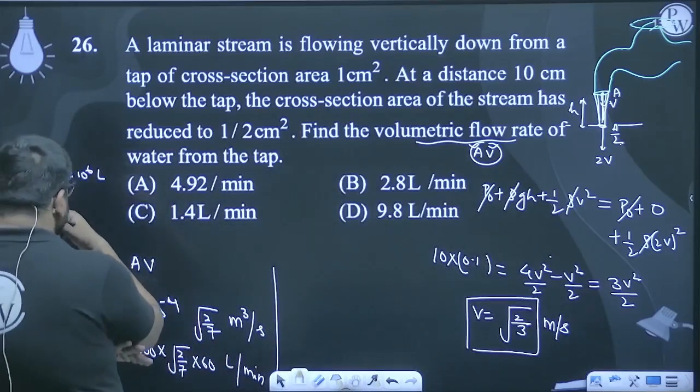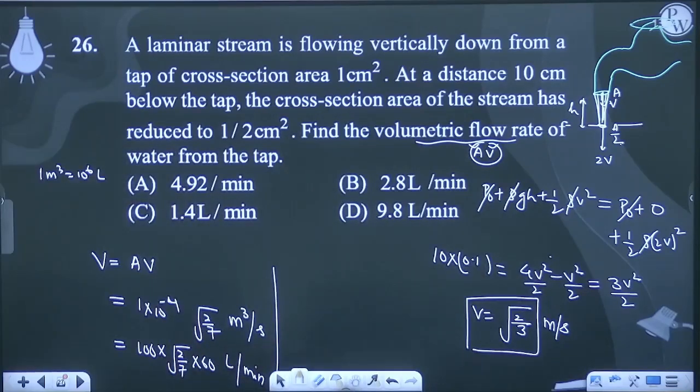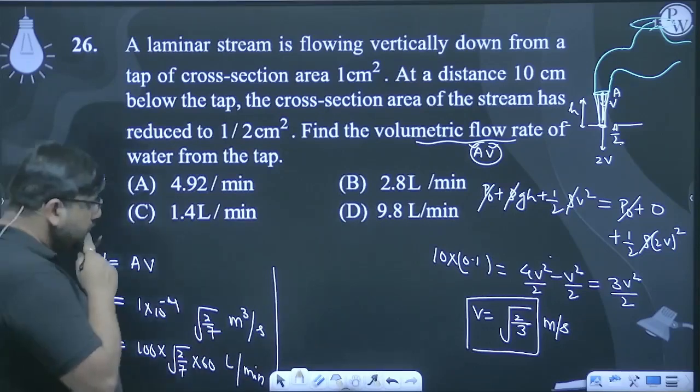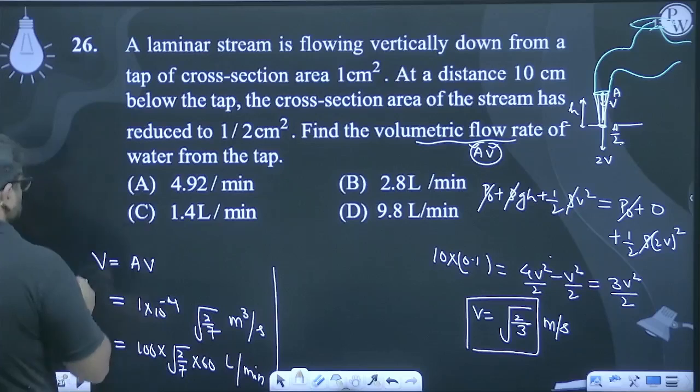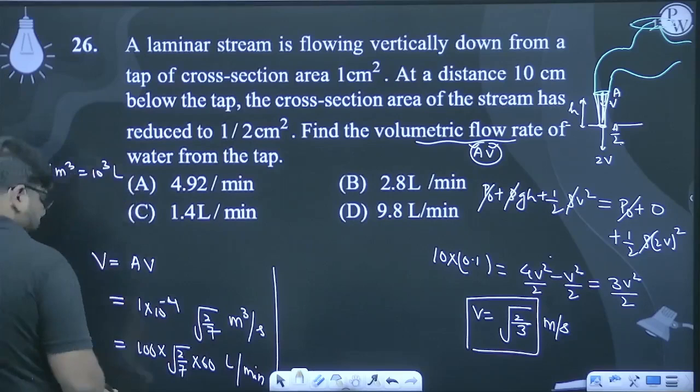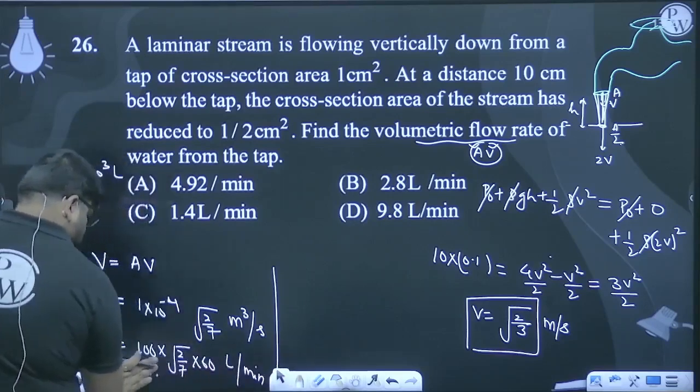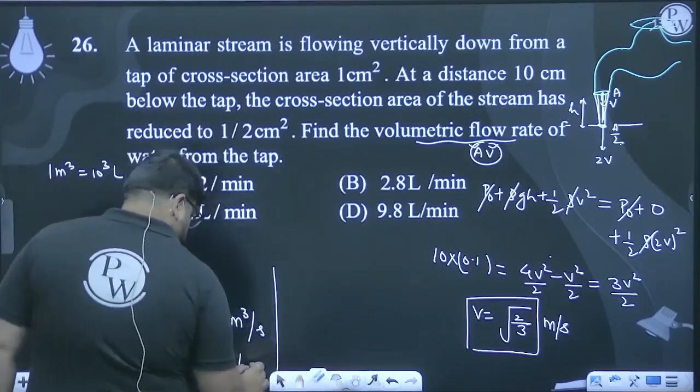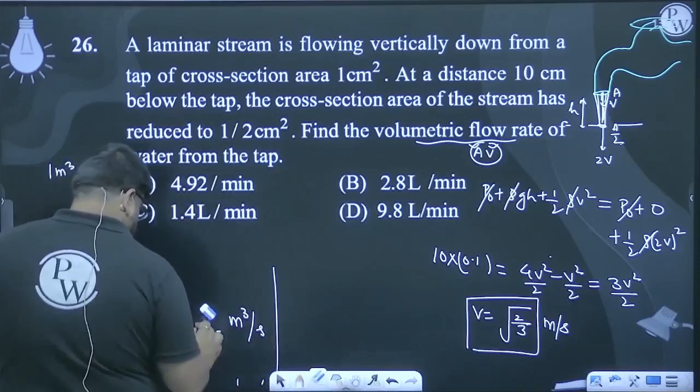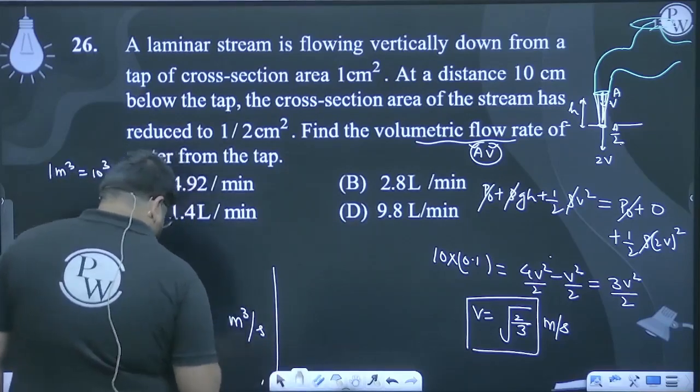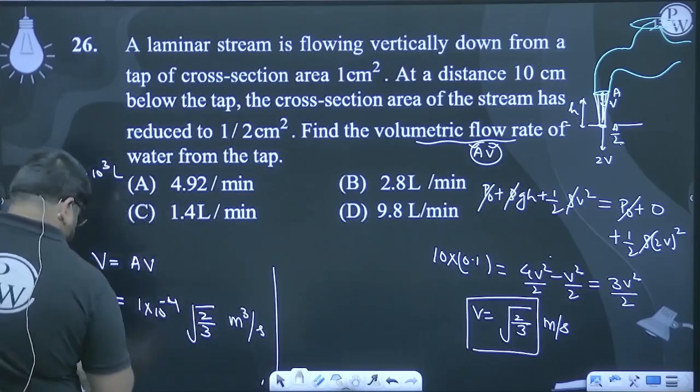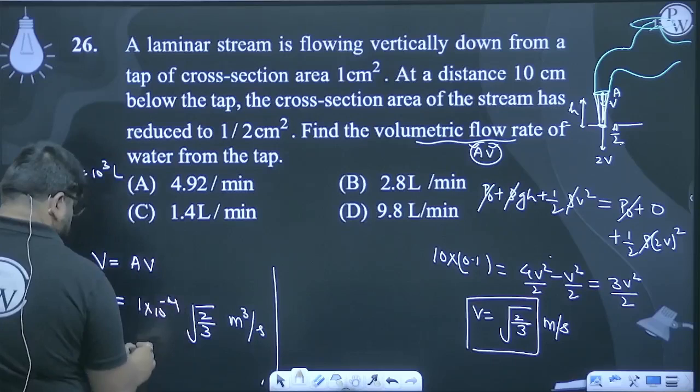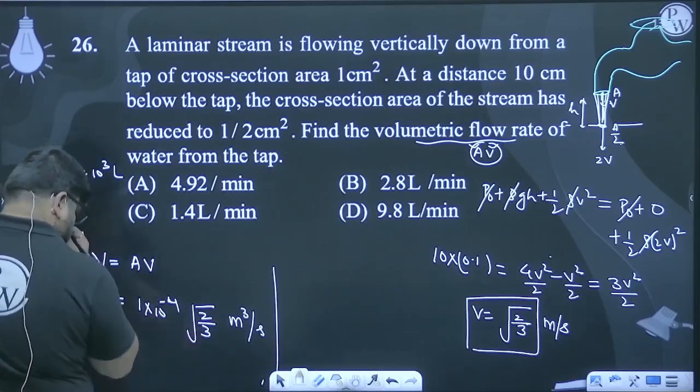And this becomes 1 cm². This is one mistake. The other mistake is I'm putting wrong data - 1 meter cube is 10³ liters, not 10⁶.